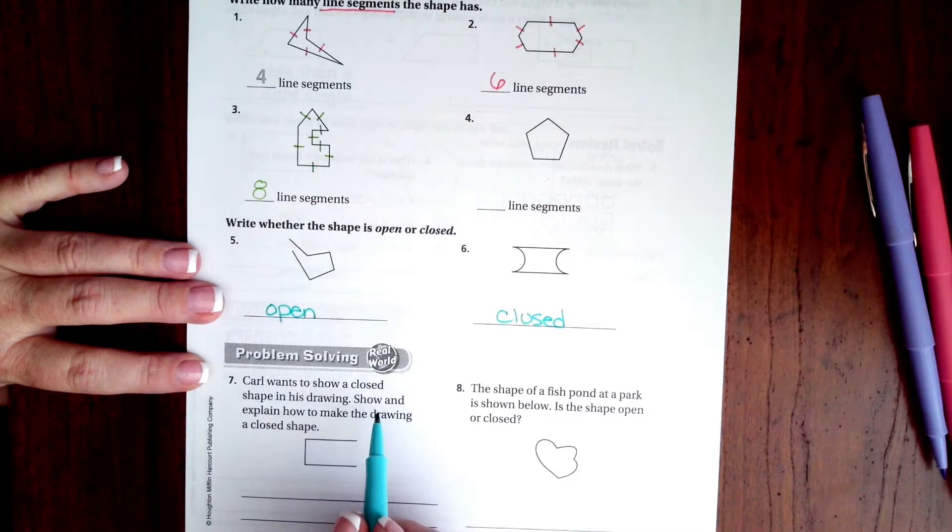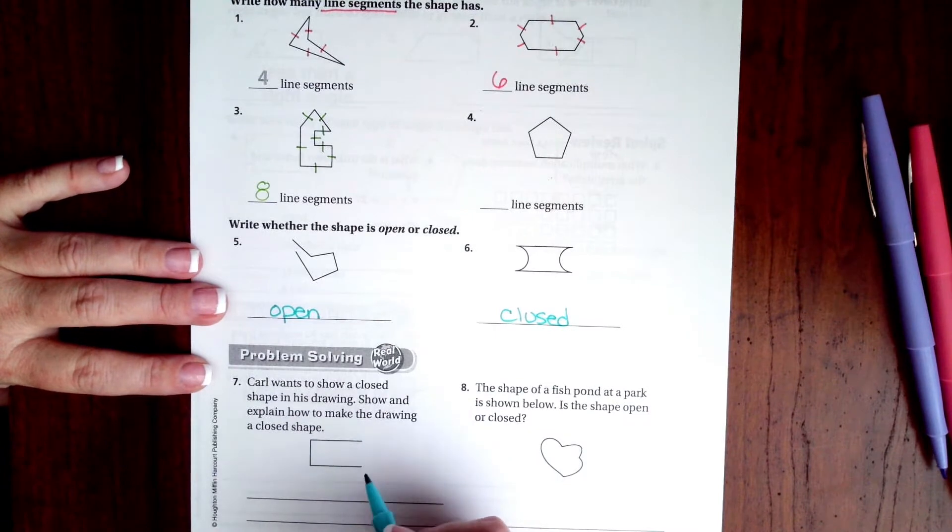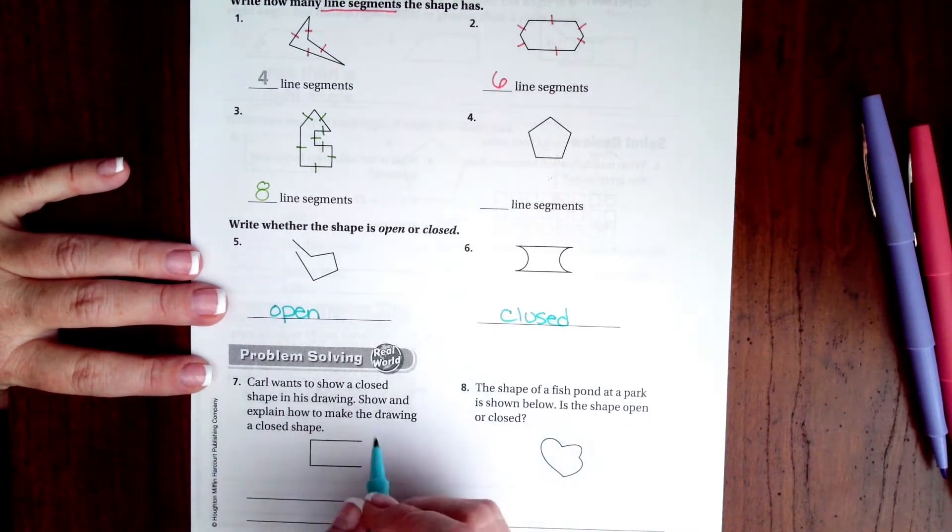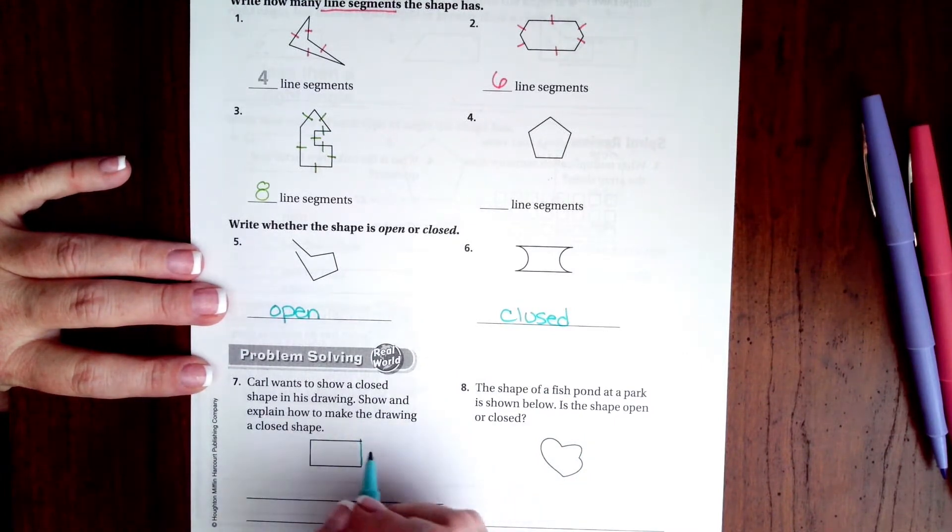Karl wants to show a closed shape in his drawing. Show and explain how to make the drawing a closed shape. So how would I close this? What is one way that I could close this? So one way is that I could do this. That would make it. Another way is that, ignore the blue line that I just drew, and I could have made it.